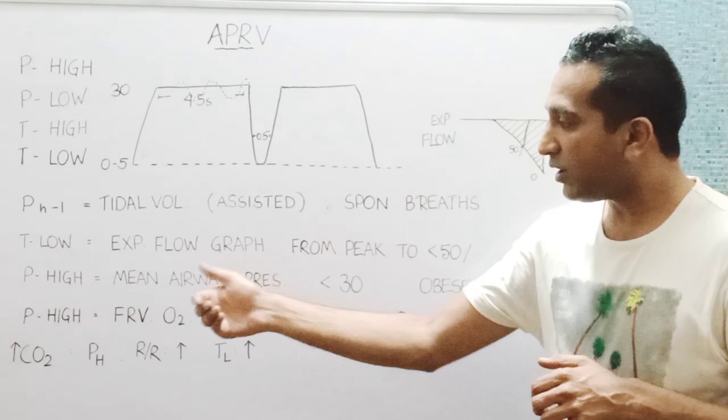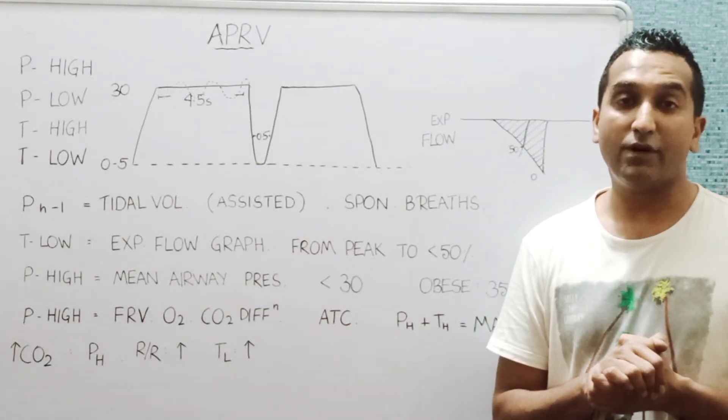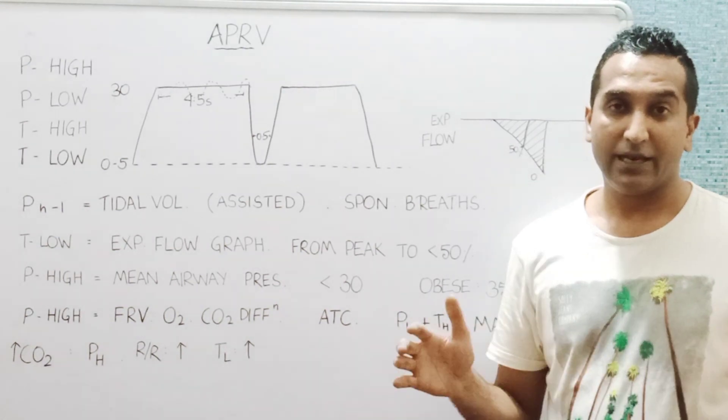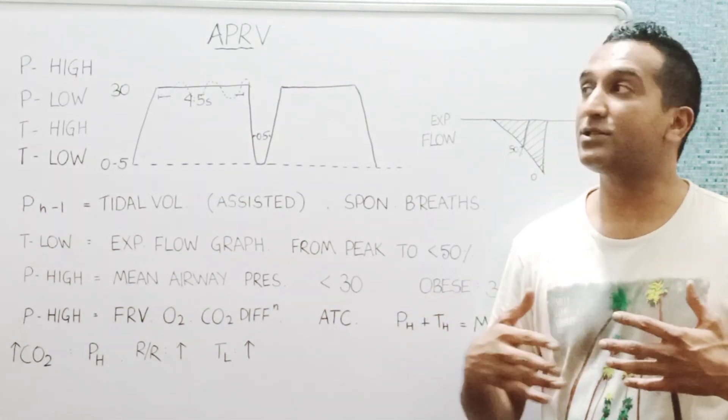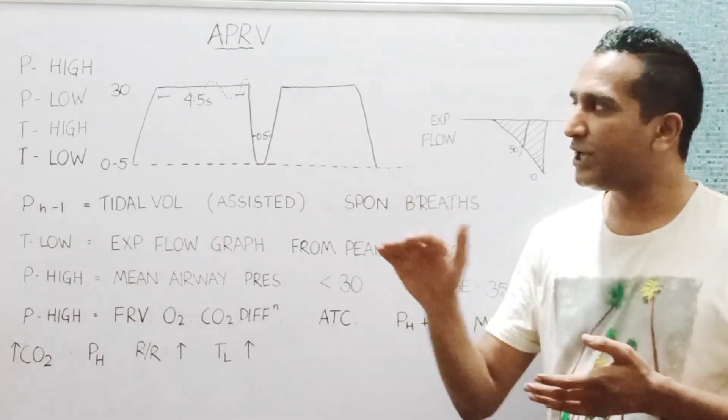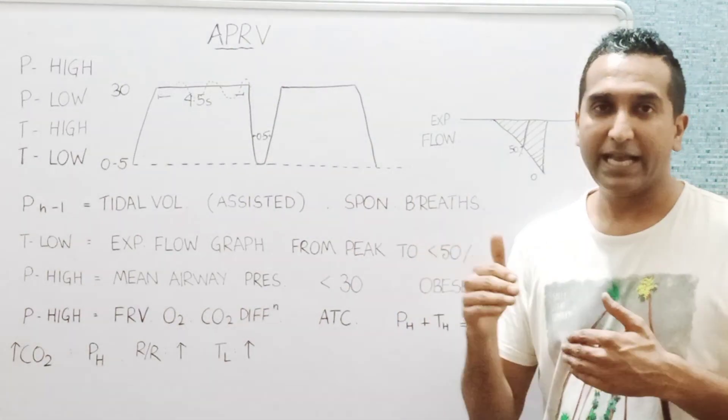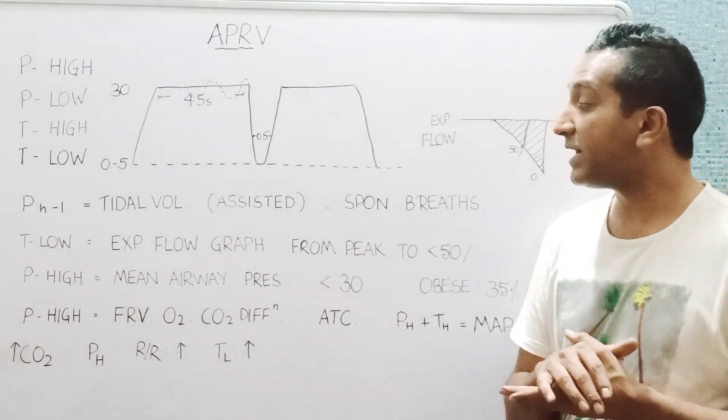And it also determines the functional residual volume the lung has. So if the lung is filled to adequate FRC, the patients will not struggle to breathe at these higher pressures. So if the patients are struggling to breathe at the higher pressures, you may just increase the P high and look at the optimal level which is reached, which makes the patients comfortable.